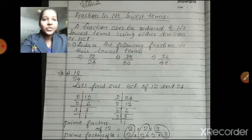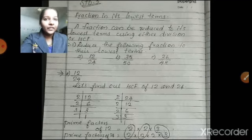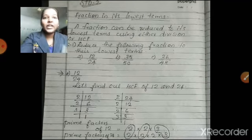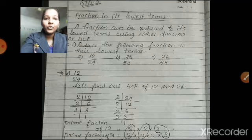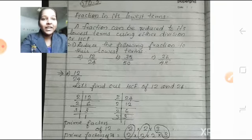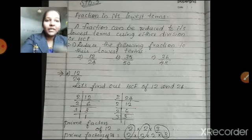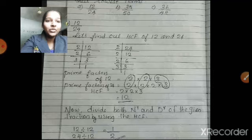The first question is 12 by 24. I will tell you the step-by-step process. The first step is to find out the HCF of the numerator and denominator — that is the highest common factor of 12 and 24. You can find it using the prime factorization method. Prime factorize 12 first, then prime factorize 24. You will get the prime factors of 12 as 2 × 2 × 3, and prime factors of 24 as 2 × 2 × 2 × 3.